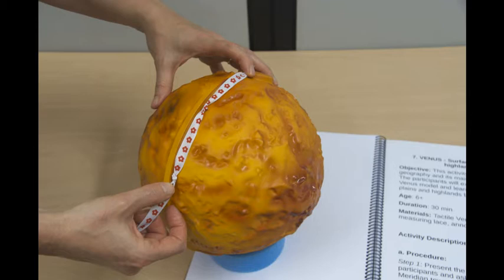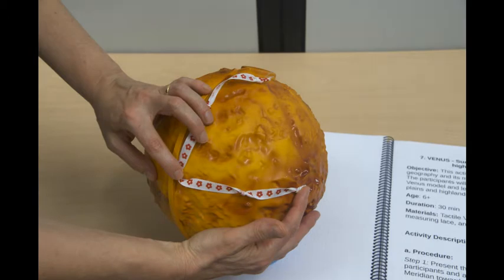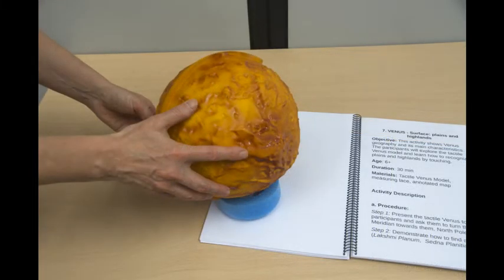For example, to locate Aphrodite Terra, measure first two knots along the meridian from the North Pole. There, we arrive at the equator of the planet, then move east or right in perpendicular to the meridian, another two knots. This elevated terrain is Aphrodite Terra.